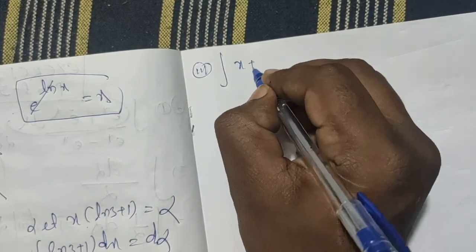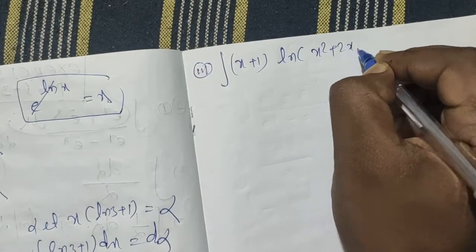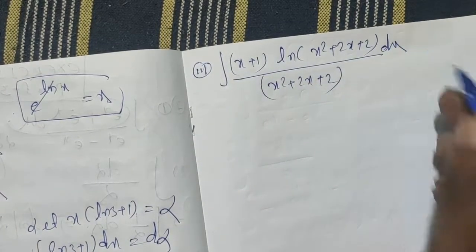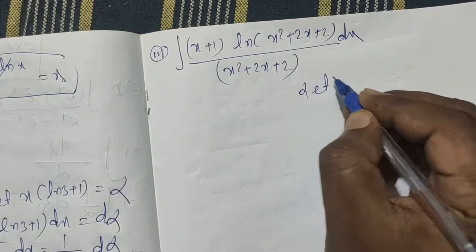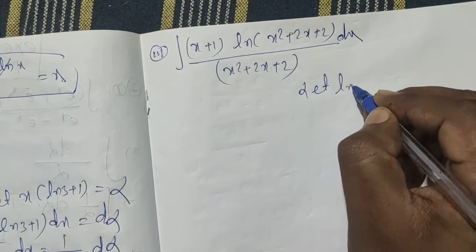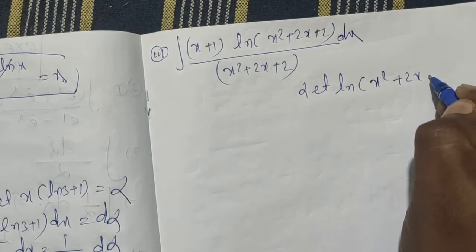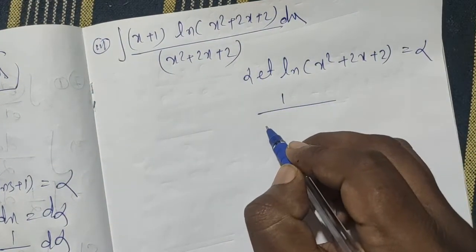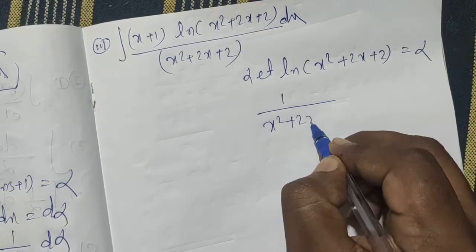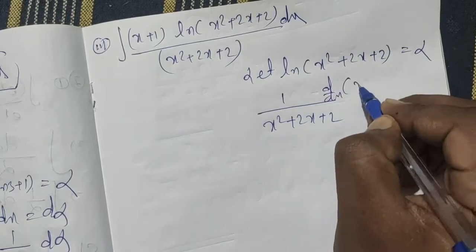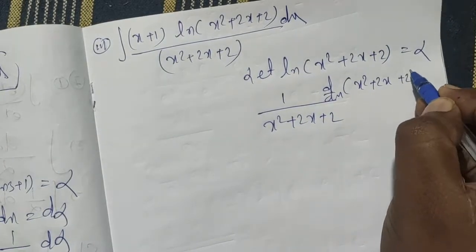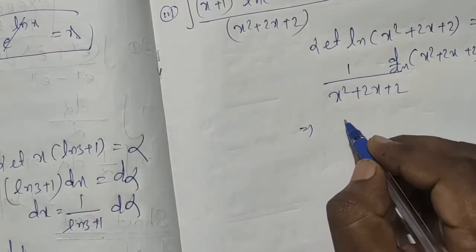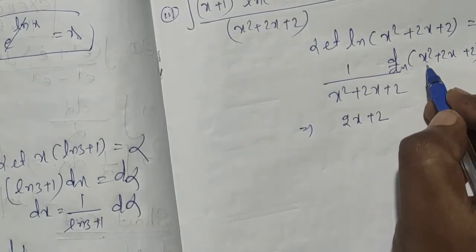Now let's get bit 3 question: the integral of (x plus 1) times ln(x squared plus 2x plus 2) divided by (x squared plus 2x plus 2) dx. Let alpha equal ln(x squared plus 2x plus 2), so d alpha equals 1 by (x squared plus 2x plus 2) times d by dx of (x squared plus 2x plus 2) dx.